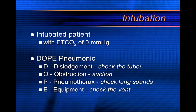Equipment is the last thing you're going to check. If they were on a ventilator, use a BVM and see if you can get end-tidal CO2 with the BVM. Make sure the ventilator is getting oxygen — some pre-hospital vents require oxygen to work at all, so make sure your oxygen bottle isn't empty. Use your DOPE mnemonic to troubleshoot intubated patients that suddenly get an end-tidal CO2 value of zero.